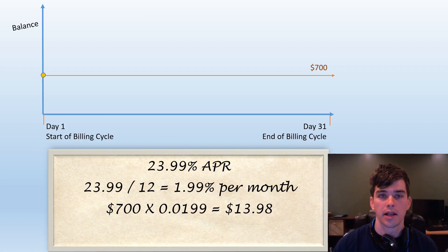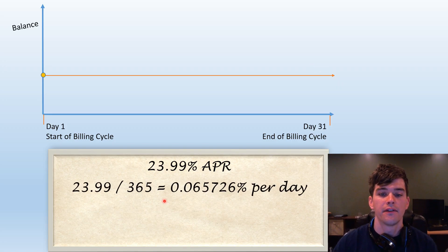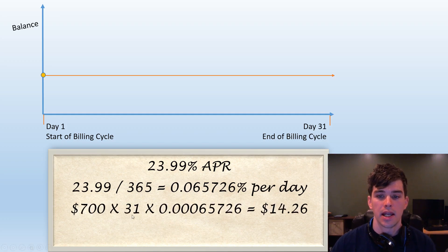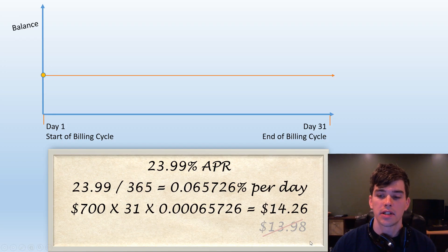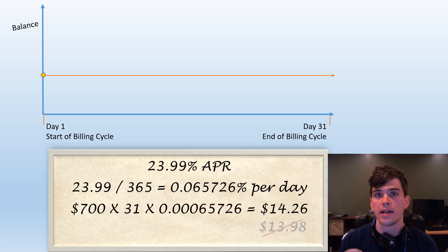If you want to understand how interest is really calculated, you have to go down to the daily level. Take your 23.99% APR and divide it by 365 — the number of days in the year — to get your daily periodic interest rate. In a month with 31 days, my $700 balance times my daily rate equals $14.26. This is slightly higher than the $13.98 estimate because there are 31 days in this month. In a month with only 30 or 28 days, the interest owed would be even less. You're paying interest for the privilege of holding that debt over time.